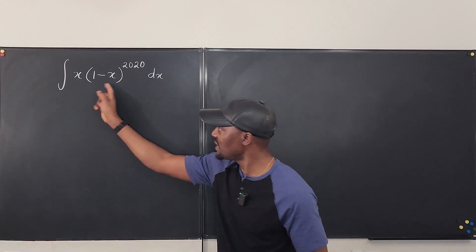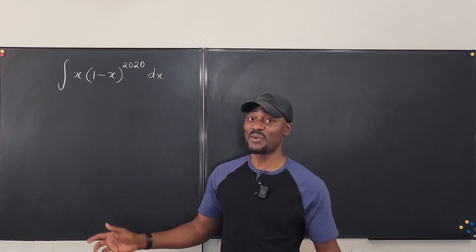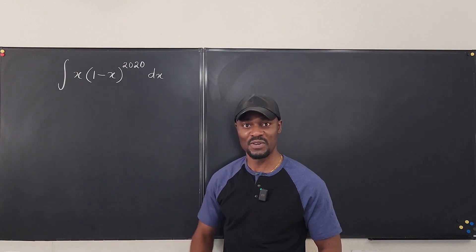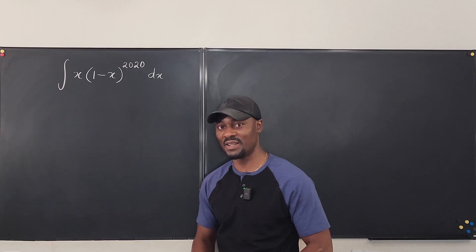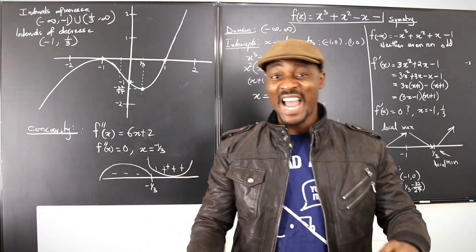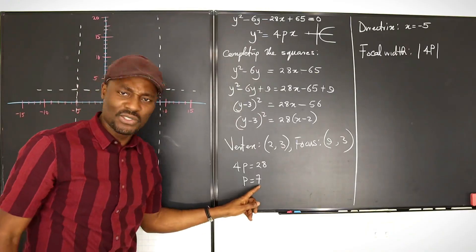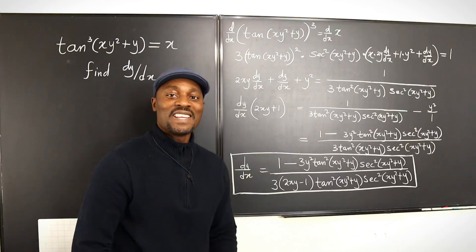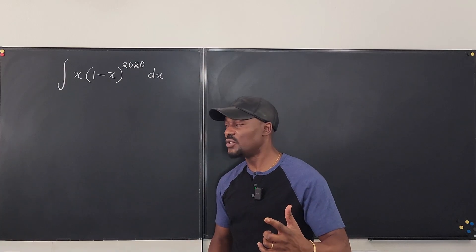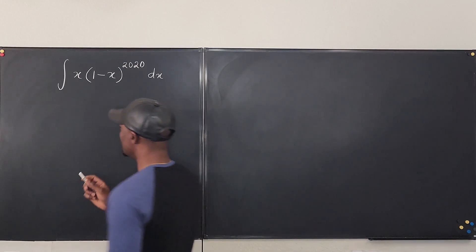So what you want to do is replace this with a new variable which we call u - that's why we say it's u-substitution. You're free to use any variable but that's what we do first. So let's free this guy from jail and then we'll see what happens. I'm gonna say let u be 1 minus x and everything becomes easy.